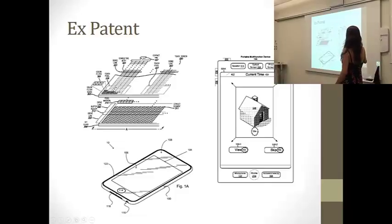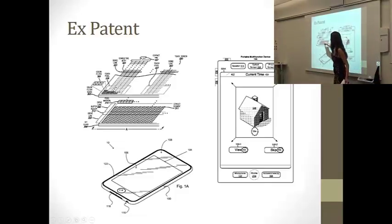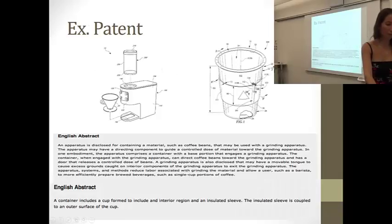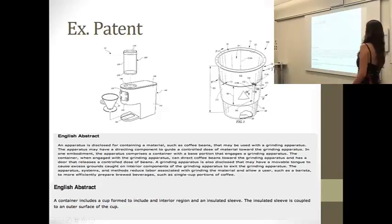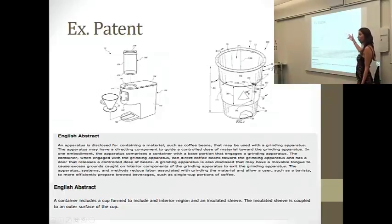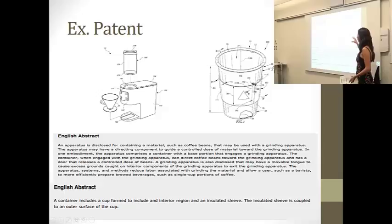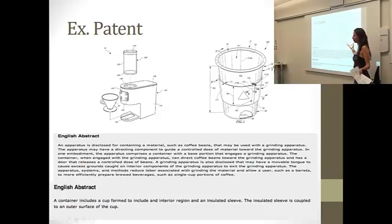Here's another example of a touch screen patent with all the different circuits. Each number in the drawing connects to a description. There's also an interesting patent on the cardboard coffee cup sleeve — that little thing you use so you don't get burned at Starbucks. It's patentable because it has an industrial application, didn't previously exist, and the design and material — cardboard rather than metal — are specifically described. All these things comply with patent requirements.